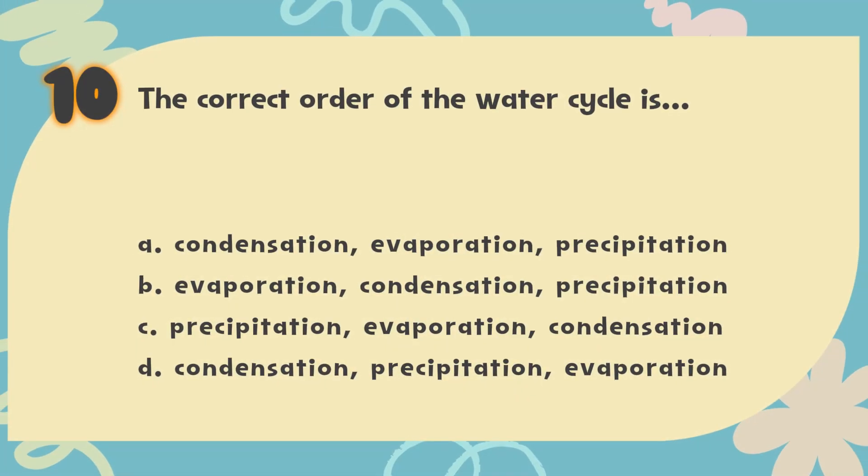The correct answer is B. Evaporation, Condensation, Precipitation. First, water evaporates and goes up. Then it condenses and forms clouds. Finally, it falls back to earth as precipitation — rain.